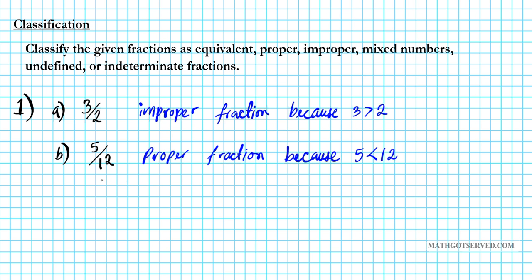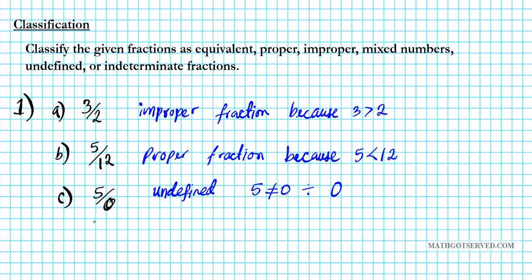Now what if we have the fraction 5 over 0? What kind of fraction is this? This is undefined. The reason why it's undefined is because you have 5, which is not equal to 0, being divided by 0. Any non-zero number divided by 0 is undefined.